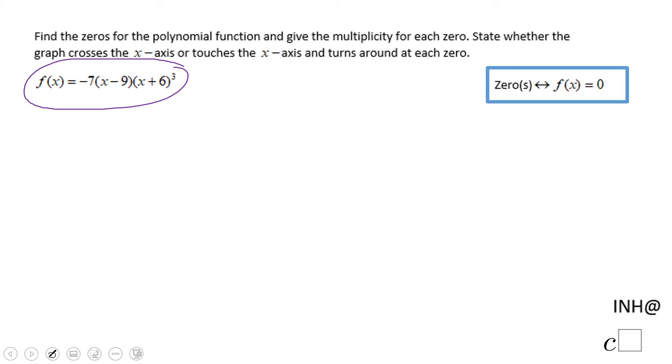For finding the zeros, you see here, we need to set up the function equals to zero. And then we can use the zero product property.